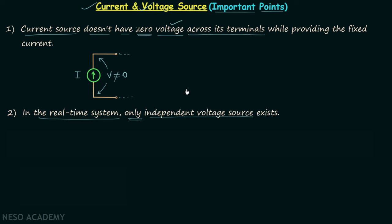So there will be no independent current source or any dependent sources present in a real time system. So this is all for the second point.